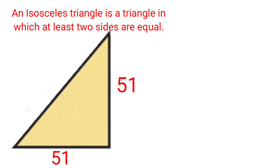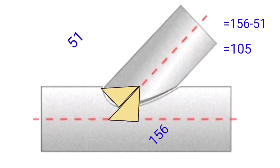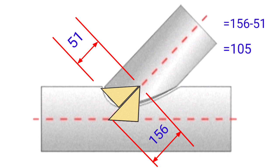So set value or run value equals 51. Now we take 156 hypotenuse value minus 51 run value, which equals 105mm.